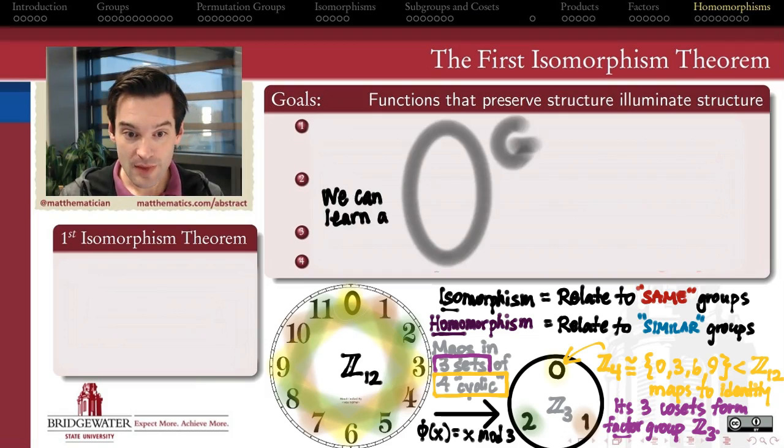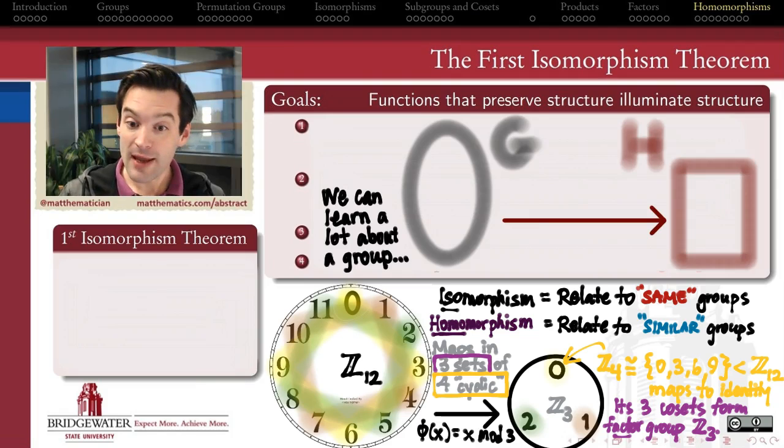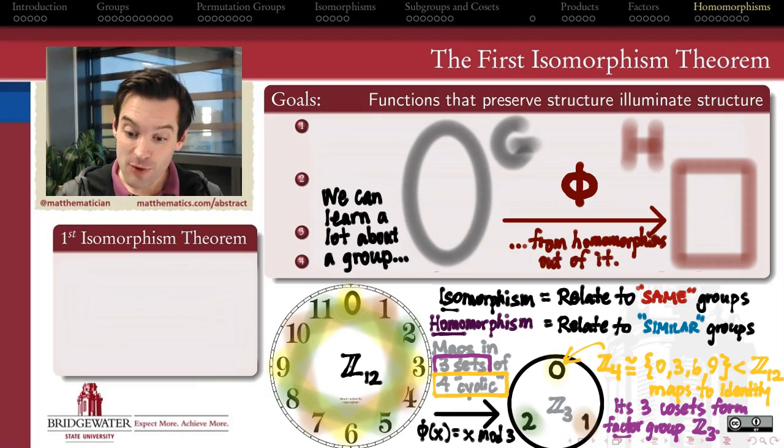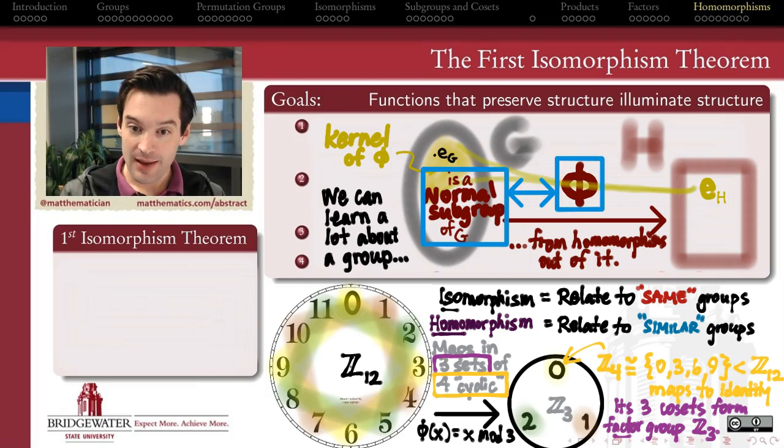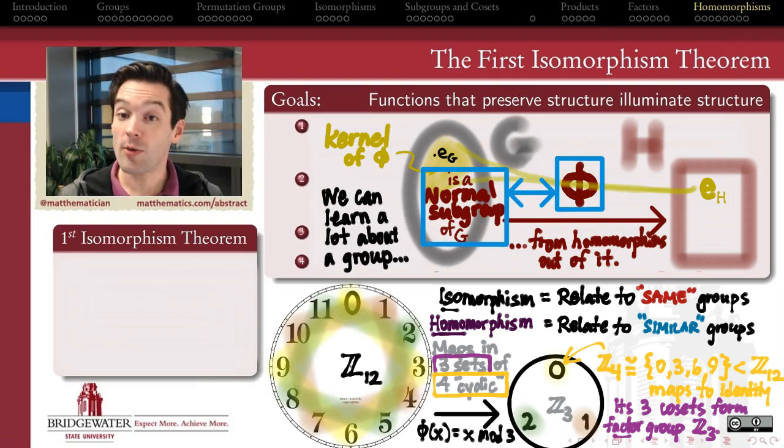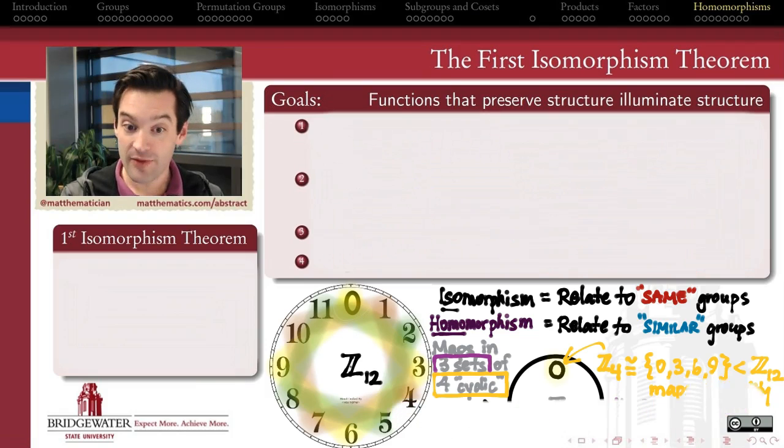What it accomplishes for us is it lets us learn a lot about a group by looking at homomorphisms that come out of that group. If you can show me a homomorphism out of G, then I can use that homomorphism to tell you something about the structure of G, and that's the key process that we're working on this week. The key connection is that kernel. The kernel consists of everything in the domain group which is getting sent to the identity element in the target group. That kernel is not just a subgroup, but as we'll see, it is also a normal subgroup. And the factor group by that normal subgroup, which is the kernel of this homomorphism, that factor group can be related to the image of this homomorphism inside of H.